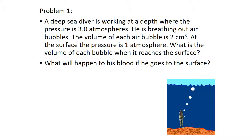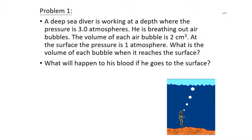A deep sea diver is working at a depth where pressure is 3 atmospheres, breathing out air bubbles of 2 cm³ each. At the surface the pressure is 1 atmosphere. What is the volume of each bubble when it reaches the surface? What will happen to his blood if he goes to the surface? Pause the video and use Boyle's Law PV = nRT to work out the answers.